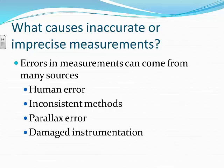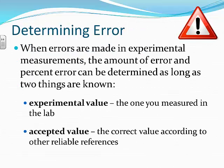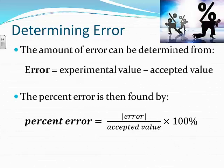We can determine the amount of error using two values: the experimental value (what you measured in the lab) and the accepted value (the correct value from a reliable reference). The amount of error equals the experimental value minus the accepted value. The percent error is the absolute value of the error divided by the accepted value, then multiplied by 100%.